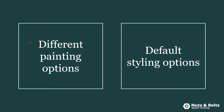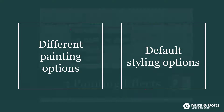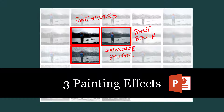First off, you have three different painting effect options to automatically turn any photo in PowerPoint into a painting. It's super important that you recognize and don't forget the default styling options. A lot of people give up on the different painting effect options because they don't realize they could increase or decrease the intensity of the effect. The three options are: paint stroke, paintbrush, and watercolor sponge.